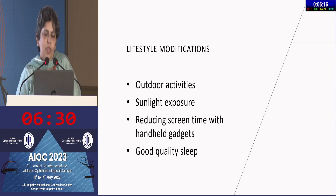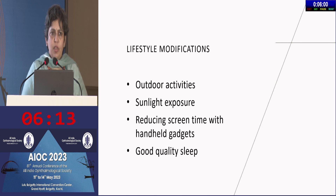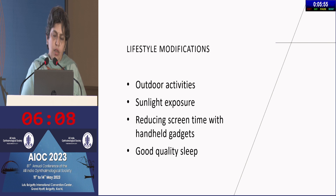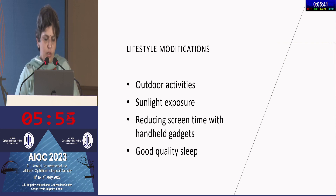What are the lifestyle modifications? Outdoor activities and sunlight exposure are both known to be protective against myopia progression. Several studies have shown that progression decreases if the child spends at least two hours outdoors. Screen time and excessive near work are considered myopiagenic and definitely increase progression. You need to spend some time educating parents about limiting handheld gadgets, especially in younger children.